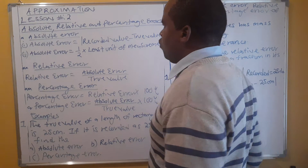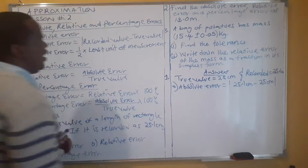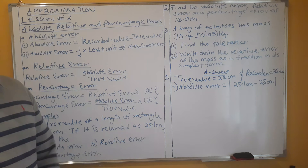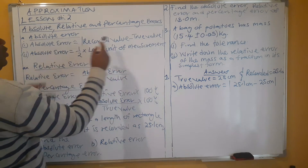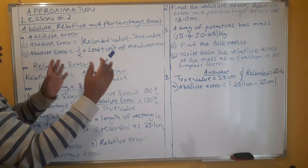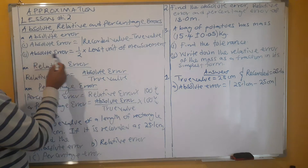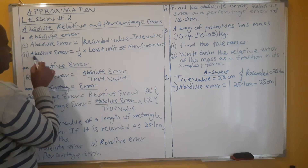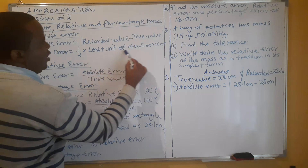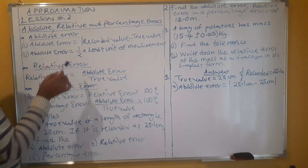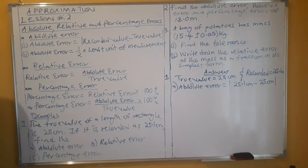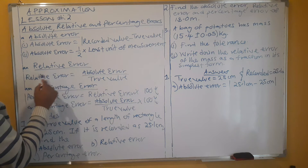What is an absolute error? Absolute error is found in two ways. By definition, it is the absolute difference between the true value and the recorded value. We can say absolute error equals the absolute value of the recorded value minus the true value. Alternatively, absolute error is half the least unit of measurement. This second method is used when only one dimension is given.